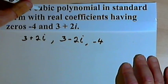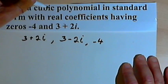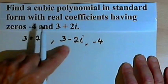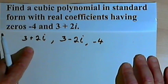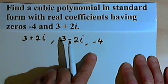And we're supposed to write the polynomial out. It's a cubic polynomial, so it's third degree, and we've got three zeros. So that's all we're going to need in terms of how many zeros there are.